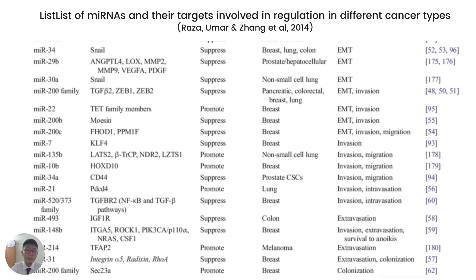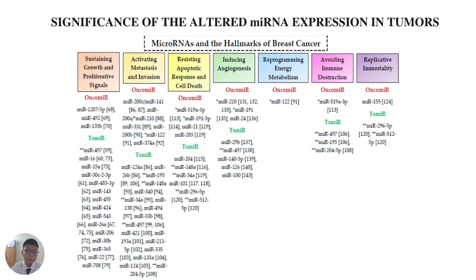This is a list of microRNAs and their targets involved in different types of human cancer. The altered microRNA expression is important and significant in cancer cells, especially in relation to their hallmarks. From this figure, we can see there are seven hallmarks of cancer that can be affected by miRNA expression.